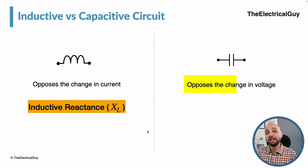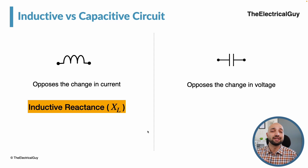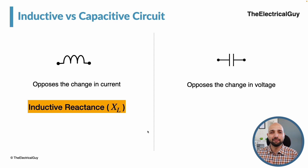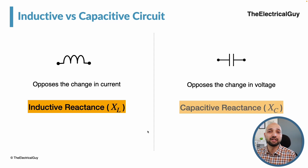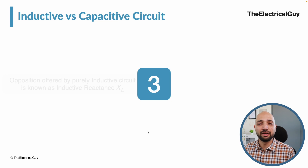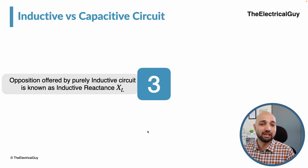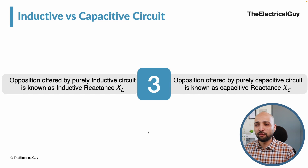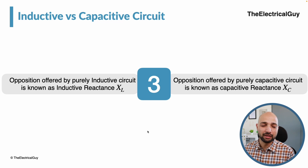In a capacitive circuit, the capacitor opposes the change in voltage. Constant voltage is fine, but changing voltage is opposed. This opposition is again different from what a resistor offers, so we call it reactance. Since it is offered by a capacitor, we call it capacitive reactance, denoted by XC. So: opposition offered by a purely inductive circuit is inductive reactance (XL); opposition offered by a purely capacitive circuit is capacitive reactance (XC).